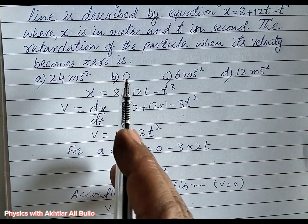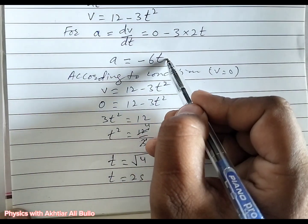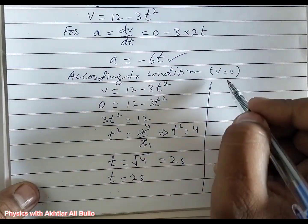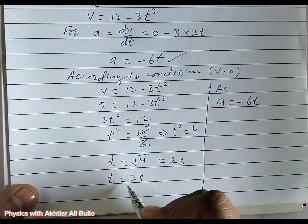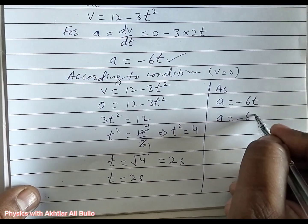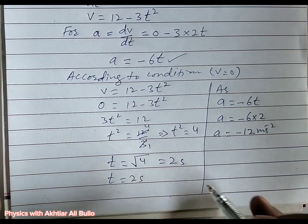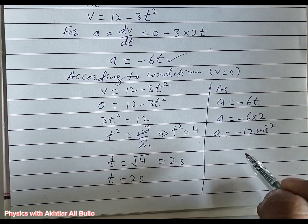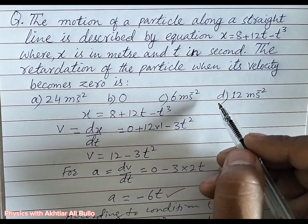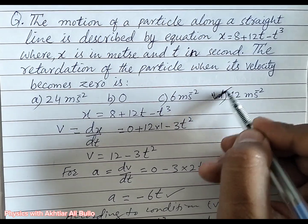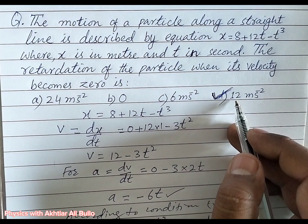We have to find the retardation when velocity becomes zero, and we obtained t = 2 seconds. By placing this value in the acceleration equation, retardation = -6 × 2 = -12 m/s². The negative value tells us this is retardation, meaning negative acceleration, also called deceleration. So the correct option is (d) 12 m/s².